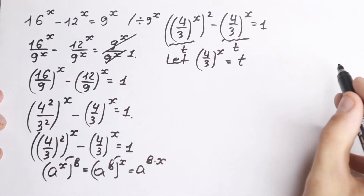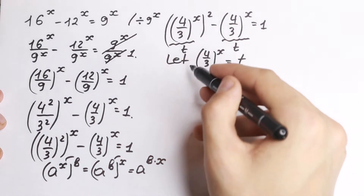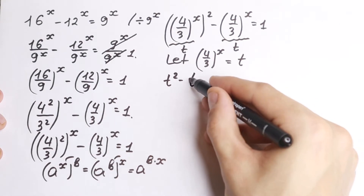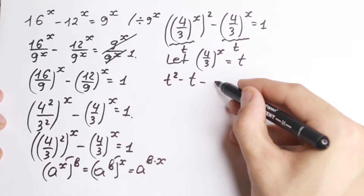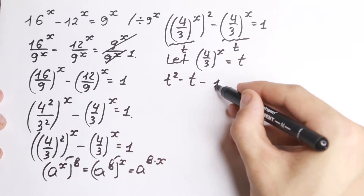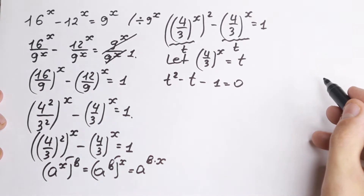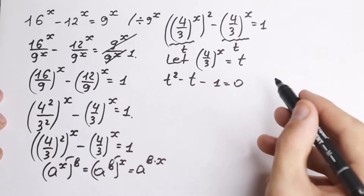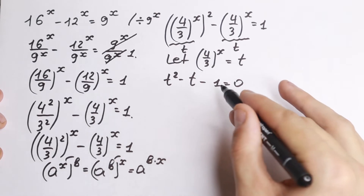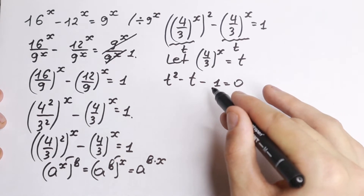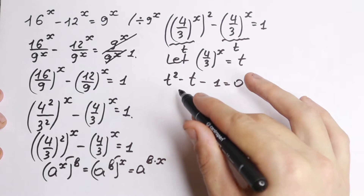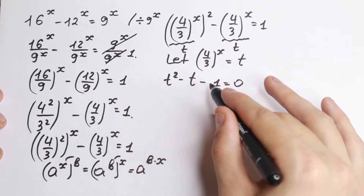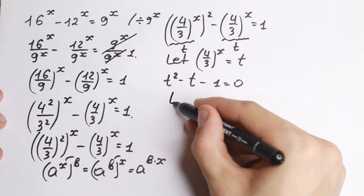What quadratic equation will we have? We get t squared minus t, and bringing the 1 to the left gives us t squared minus t minus 1 equal to 0. Real quick — since this is a quadratic equation, we identify a equal to 1, b equal to minus 1, and c equal to minus 1.